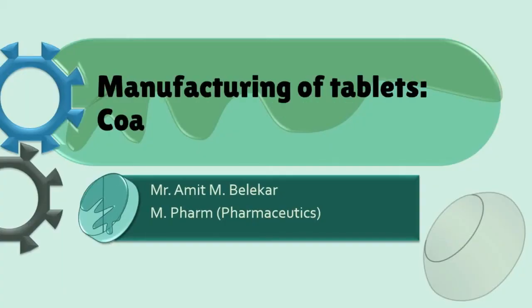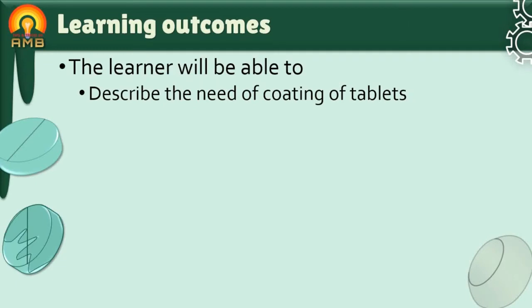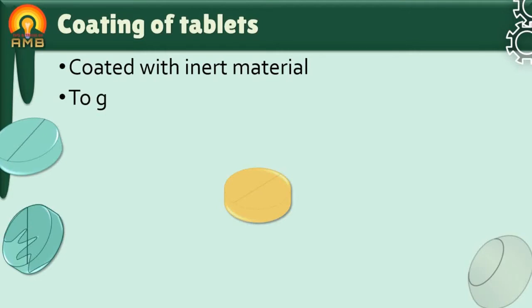After going through this presentation, the learner will be able to describe the need of coating of tablets, describe methods of coating, and describe coating pan. Many times tablets are coated with some inert materials. Tablets are coated to get some characteristics in them. Now let's discuss why coating of tablet is done, or reasons for the coating of tablets.